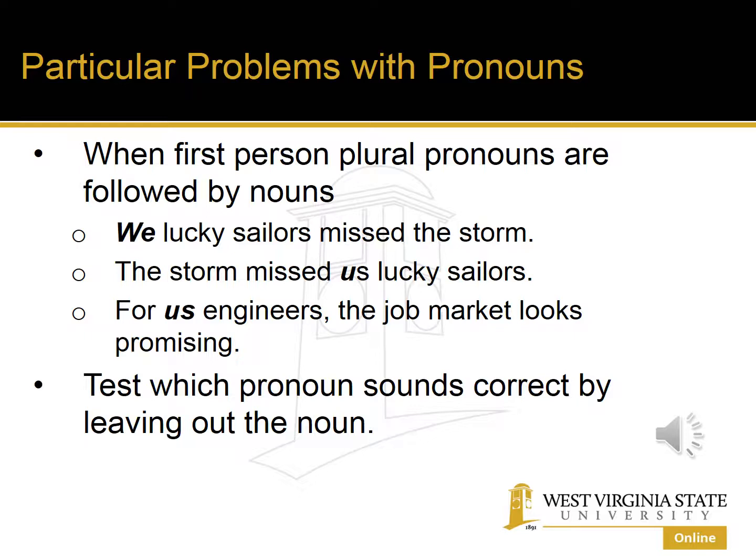'The job market looks promising.' A very easy way to test whether to use 'us' or 'we' is to take the noun out. If you take the noun out: 'We missed the storm' — you would not say 'us missed the storm.' 'The storm missed us.' 'For us, the job market looks promising.' Taking out the noun makes it clear which case the pronoun should be.